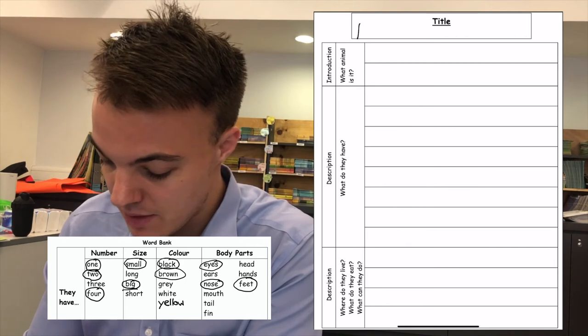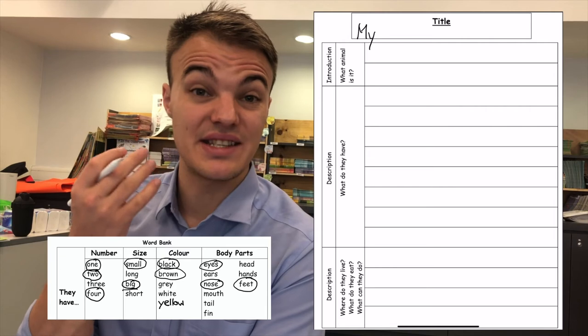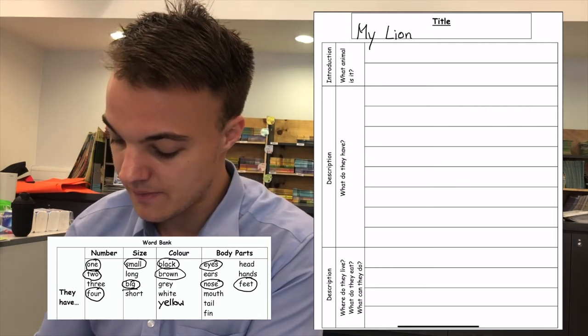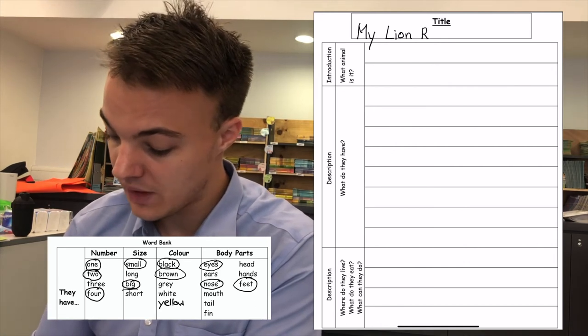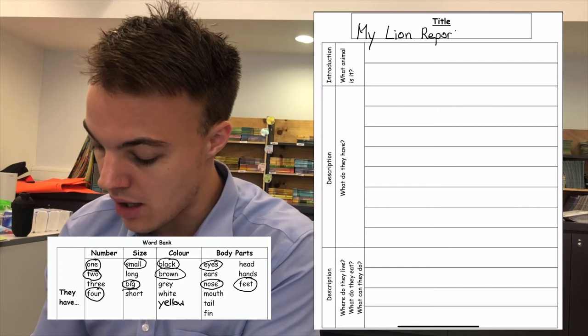Big letter M. My. Big letter L because this is the title. Lion. And big letter R. Report. R E P O R T.